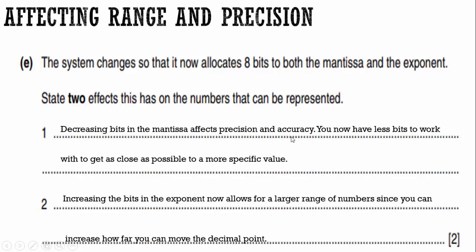So affecting the exponent affects the range, affecting the mantissa affects precision and accuracy. Now in this case, they took away bits in the mantissa. So that gives us less precision and accuracy. They gave us more bits to the exponent that increases the range. So the reverse is also going to be true. If they take bits away from the exponent, we have a smaller range, but we can get higher precision and accuracy. So the mantissa and exponent bits, there's a trade-off. You can give more bits to the exponent, but you have to take them from the mantissa. If you want more bits in the mantissa, you have to take them from the exponent.